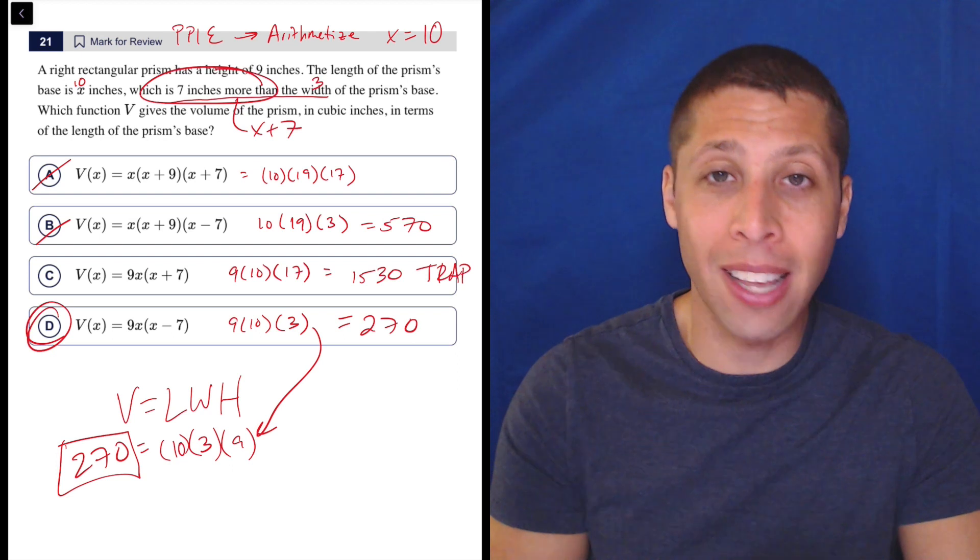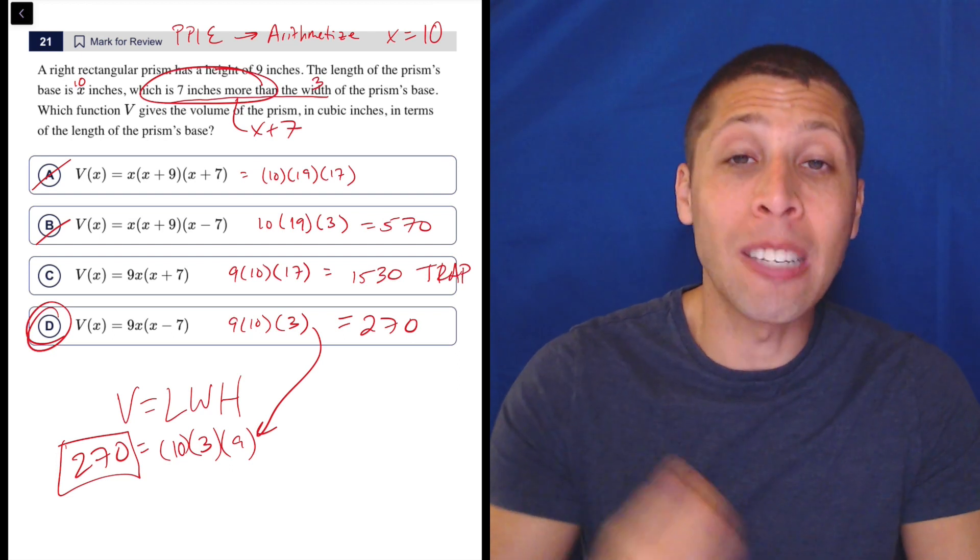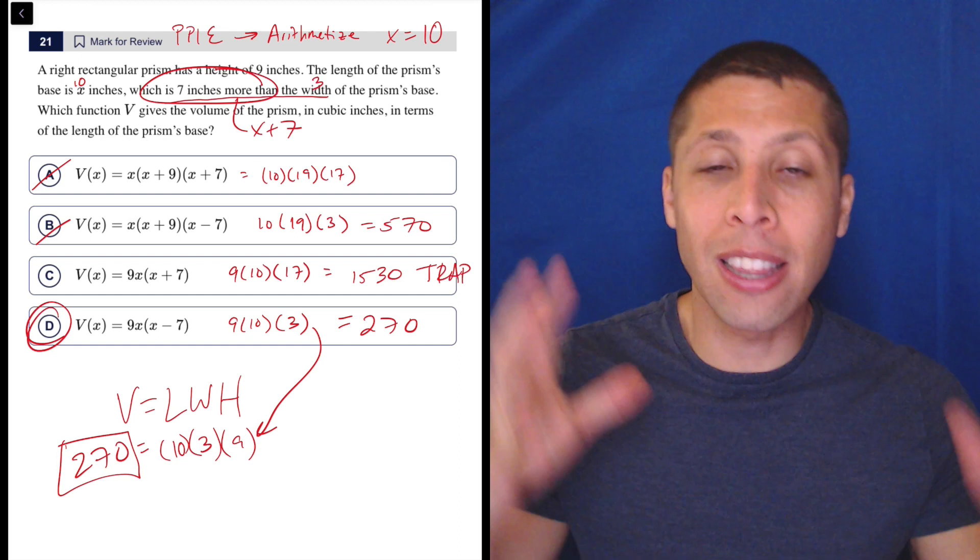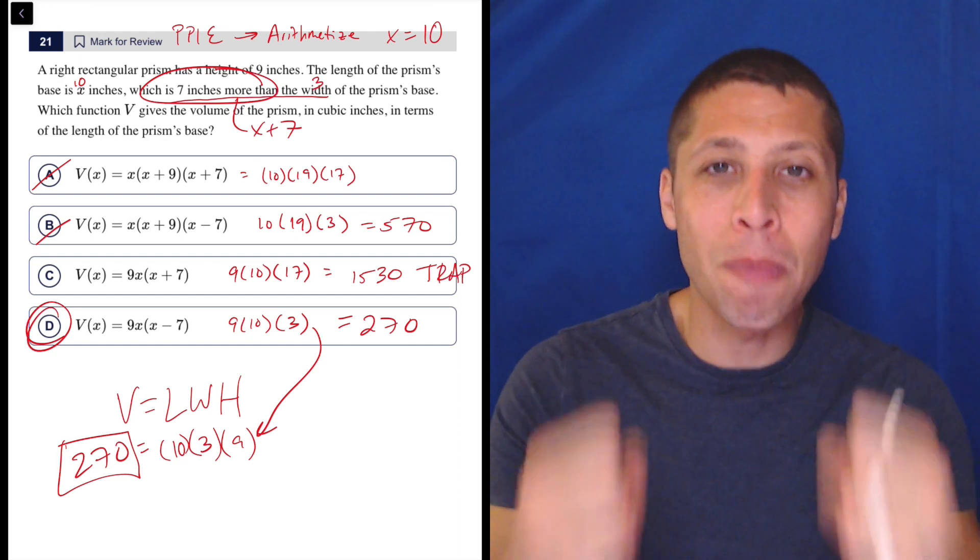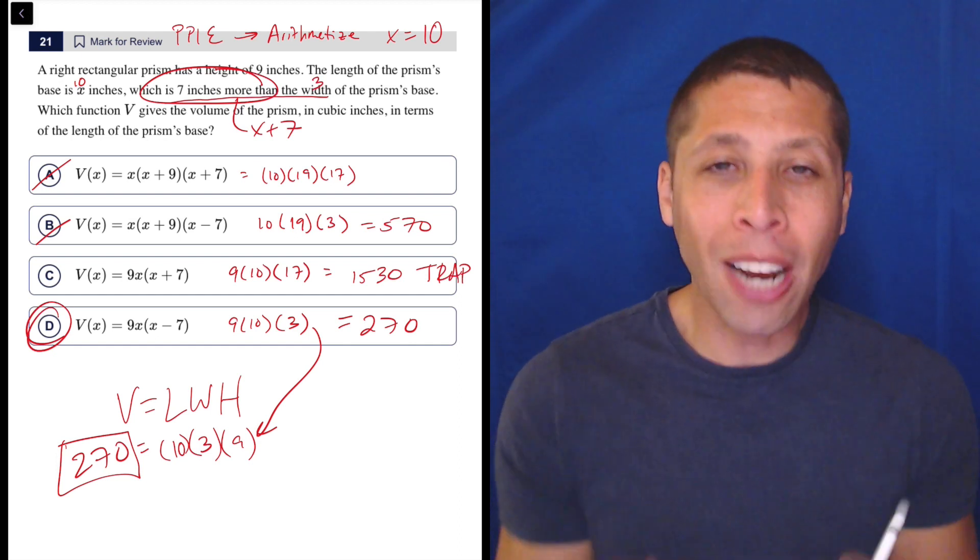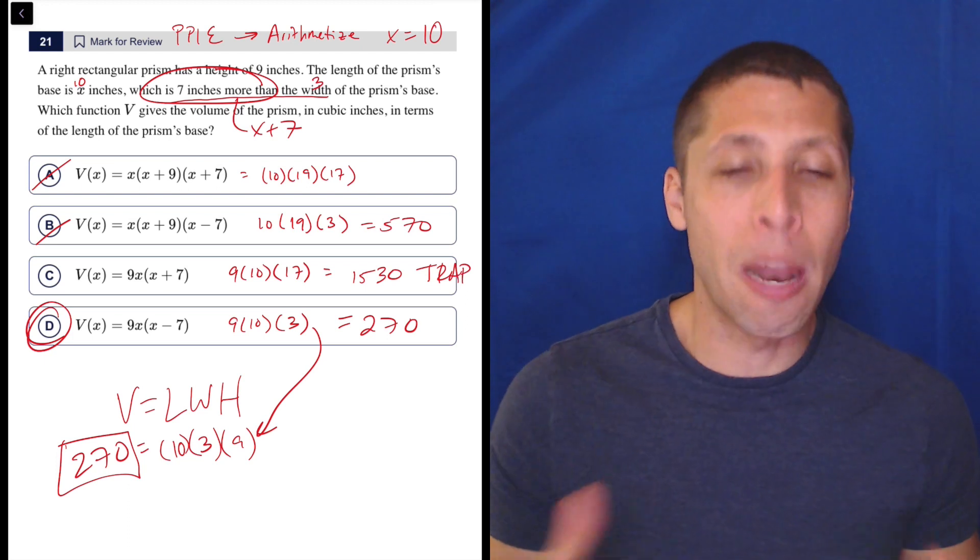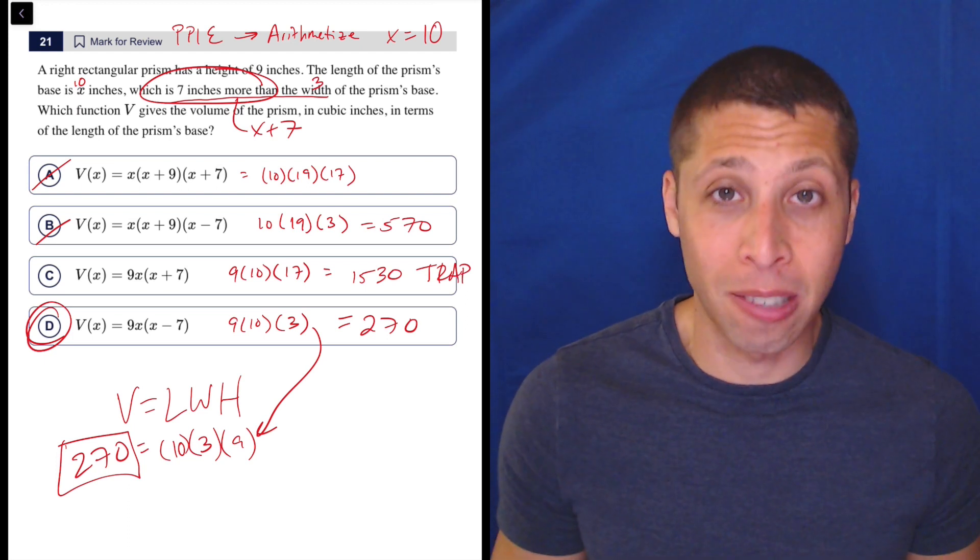So on questions like this, think back to plug points into equations. You might need to make up a point, but it's better than thinking about it conceptually. Once you have dimensions for this prism, you can actually just do geometry and it makes it so much easier and basically impossible to fall for the trap.